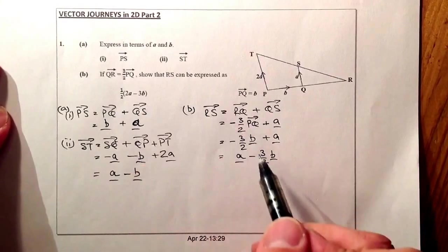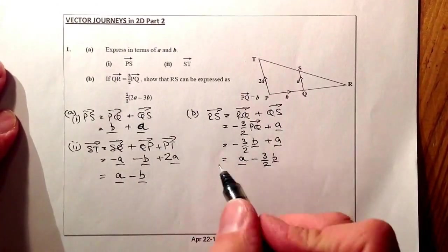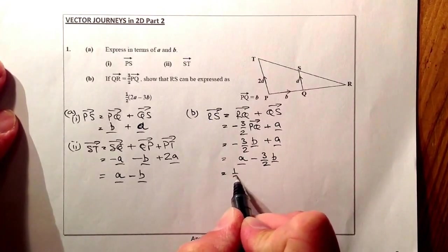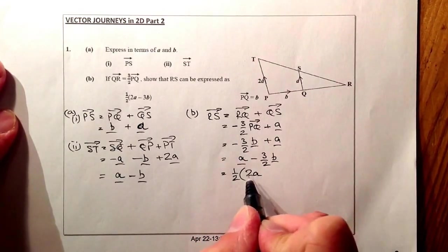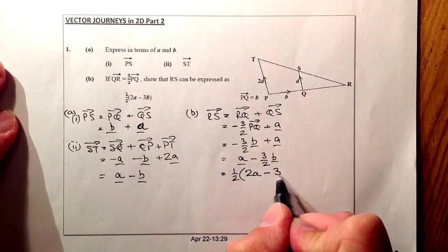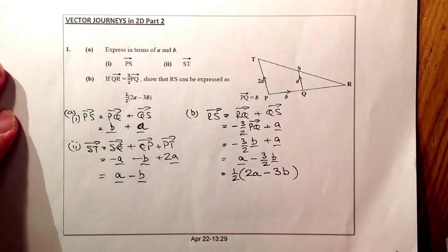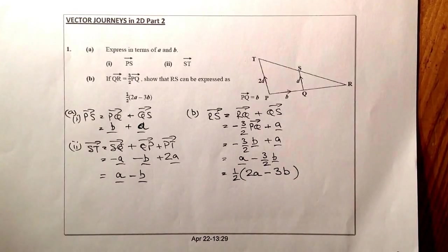Now, that's not exactly the same as that. What I could do is I could take out a common factor of a half. So if I take out a common factor of a half, what I would have in the bracket would be 2A, because a half times 2A will give me A, minus 3B. And that's what I've been asked to complete. So that would be that question concluded there.